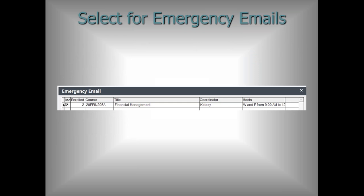Emergency emails now bring up a select list for you to choose which courses meet on the day of the emergency. If it's a building-specific emergency, it still shows the list of courses and you can uncheck any course you don't think is relevant. For example, if the emergency started in the afternoon, you can uncheck the 9 AM to 12 PM course since those students are likely already in the building.